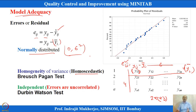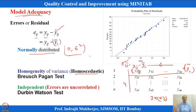We check equal variance — sigma_1-squared through sigma_s-squared. If the underlying distribution of each group is normal, we use Bartlett's test; otherwise, we use Levine's test or a multiple comparison test to confirm whether the variances are the same.